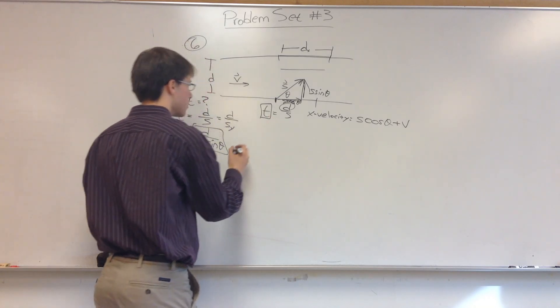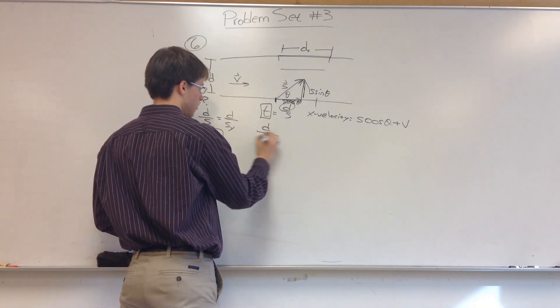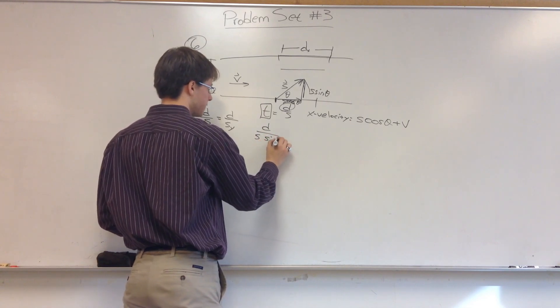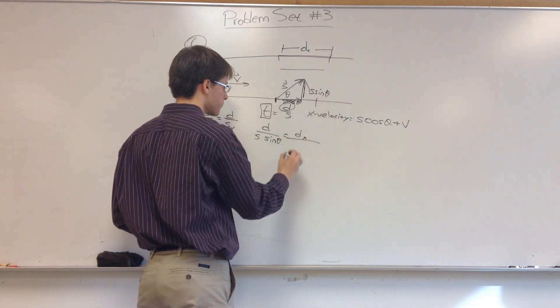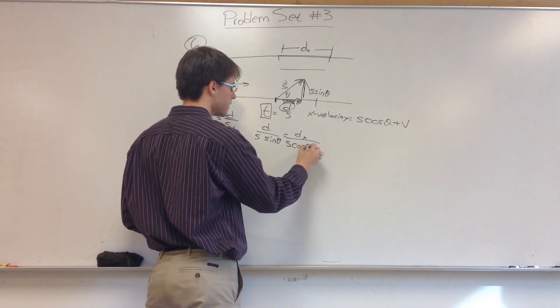So setting this up, we know our time is D over S times the sine of theta, and that's equal to DX, which we want to solve for, divided by X velocity, which is S times cosine of theta plus V.